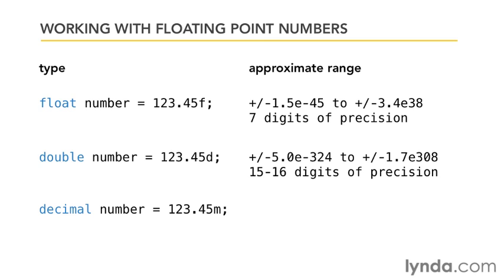And then finally, there's the decimal number. The decimal number is an interesting beast because it actually works in base 10 and not base 2, like the other kinds of floating point number types that C Sharp works with.